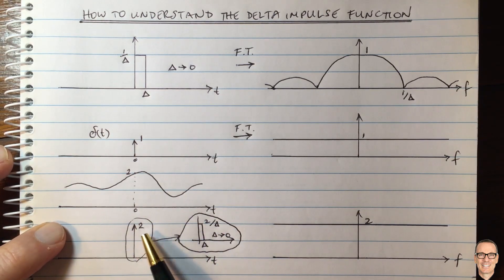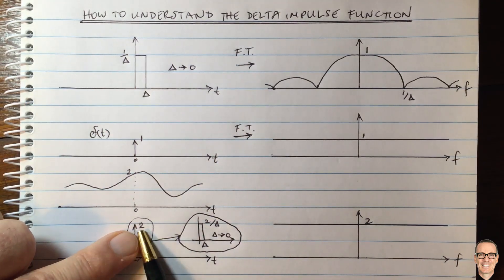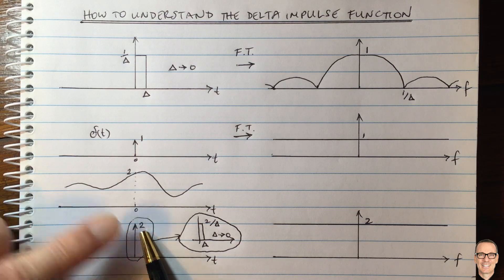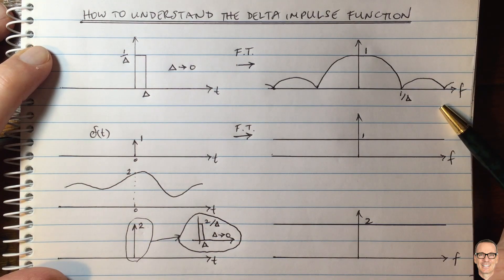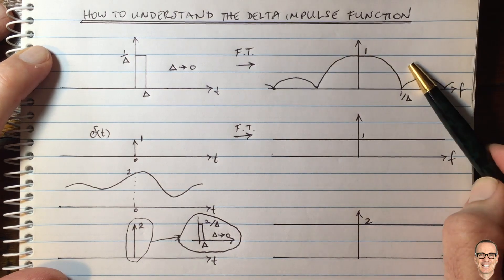So this is how to think about the delta function. It does have an infinite height, but this is what it means when we write numbers next to it. Hopefully that's given you more intuition on how to understand the delta impulse function.